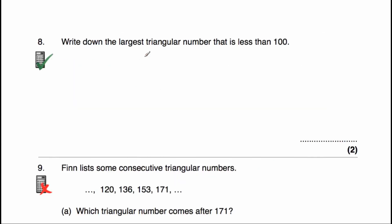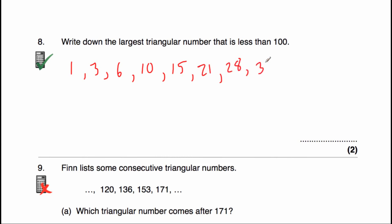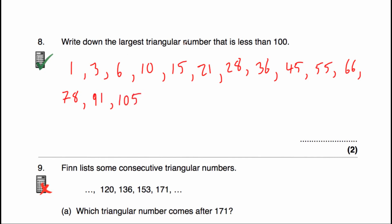Question eight says write down the largest triangular number that is less than 100. Listing: 1, 3, 6, 10, 15, 21, 28, 36, 45, 55, 66, 78, 91, and then 91 + 14 = 105. We've been asked for the largest triangular number less than 100, so that would be 91.